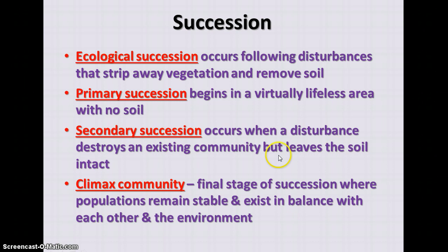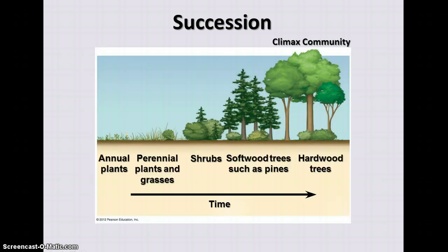In secondary succession, the soil is already present, so it goes faster. Primary succession takes much longer to reach the climax community. Secondary succession occurs where there is already some soil, either from soil formation by lichens and early plants, or from recolonization of an area where soil already exists.